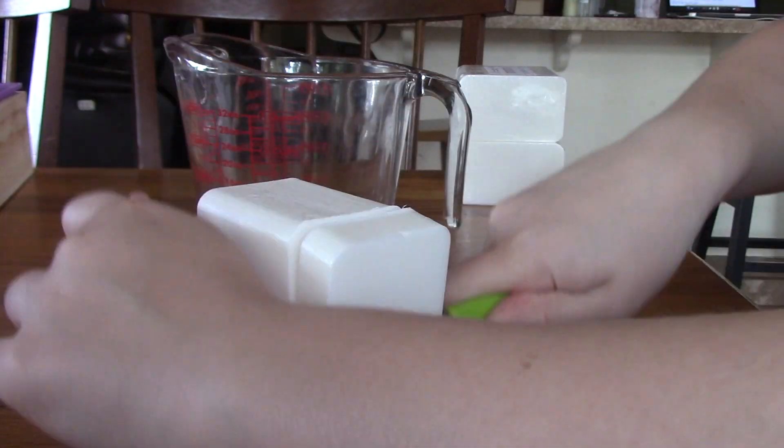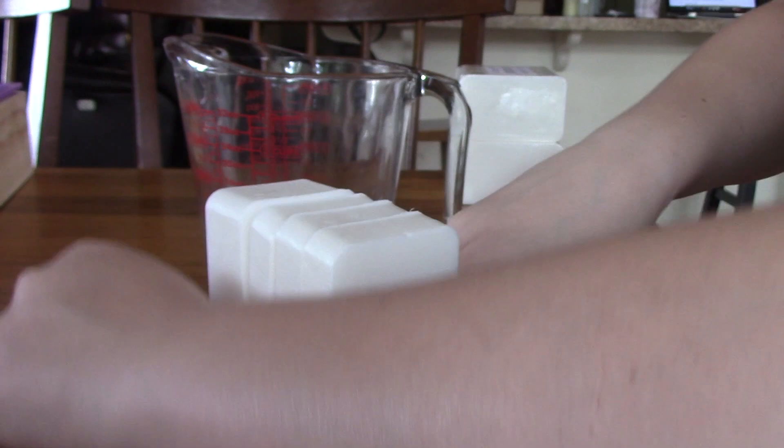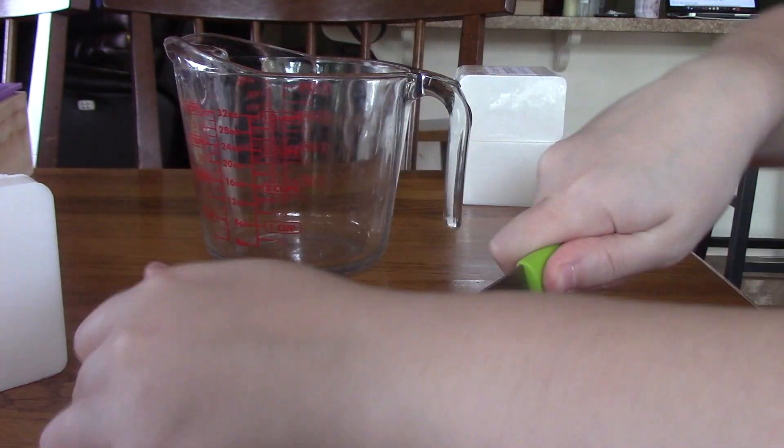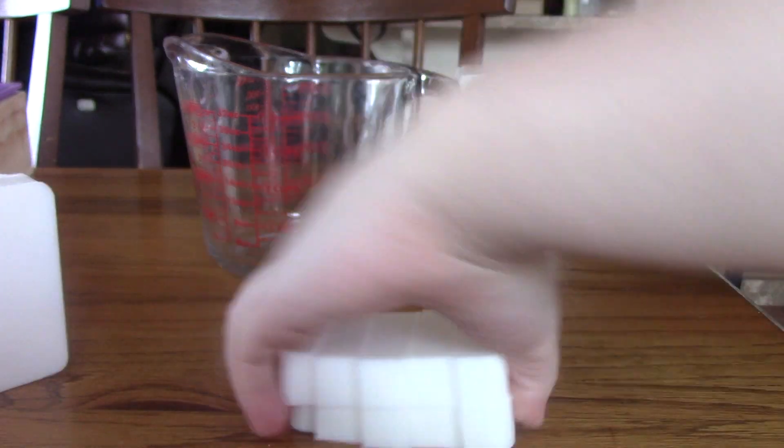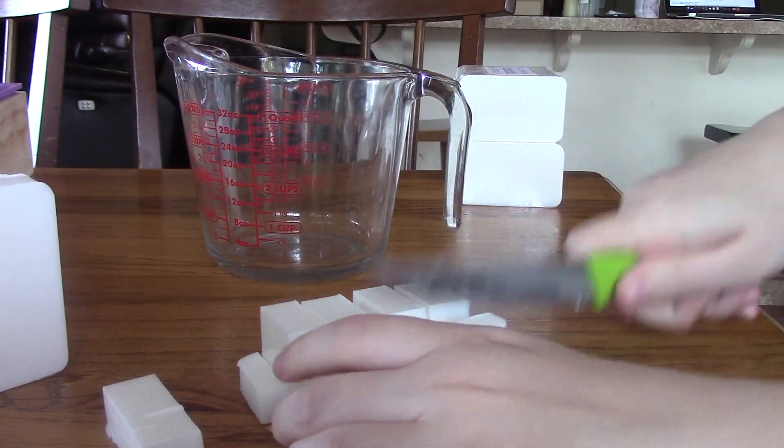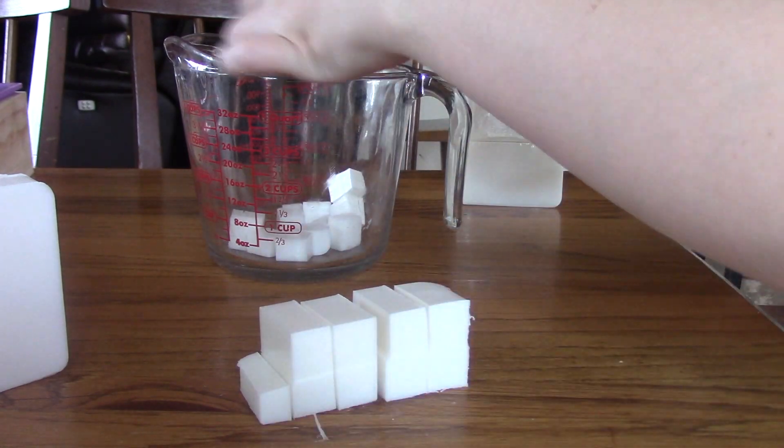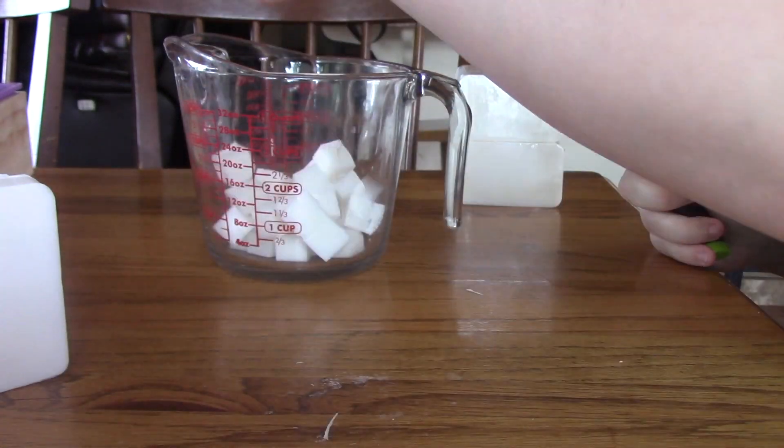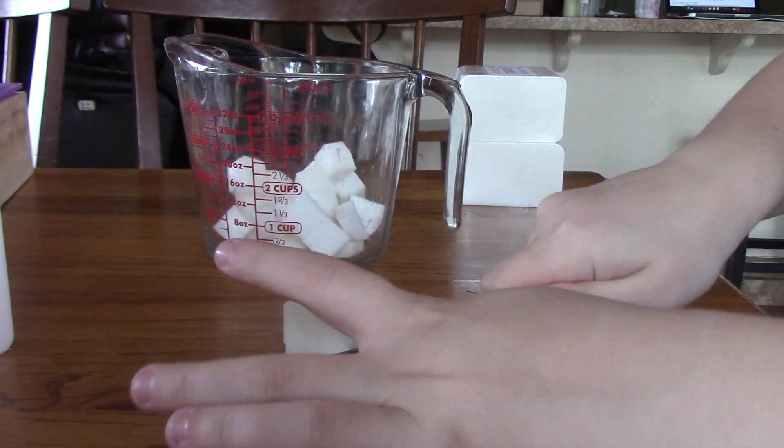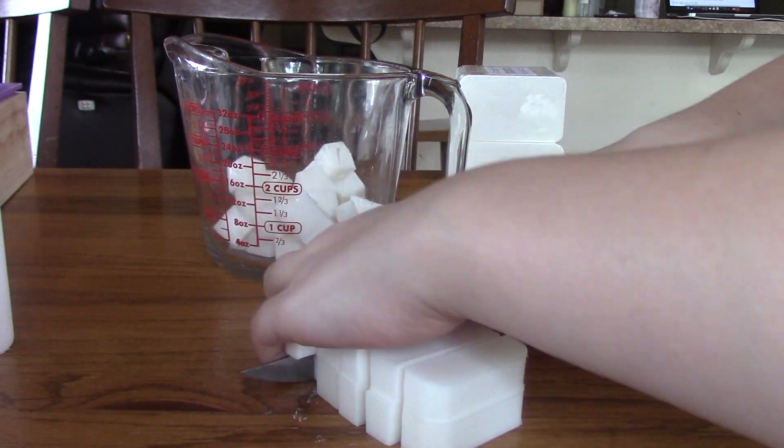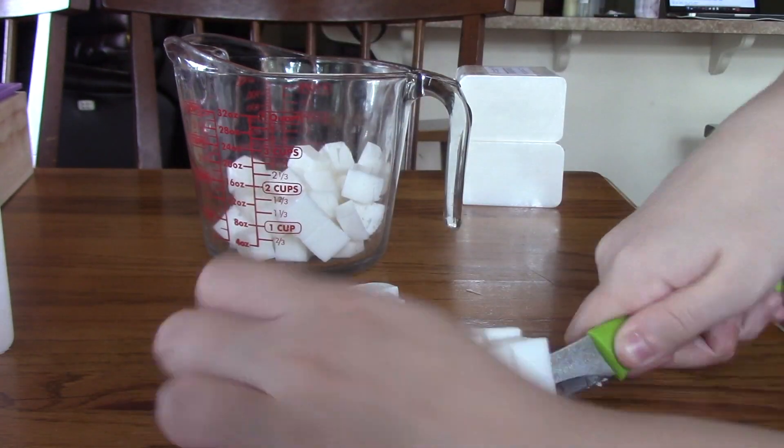To start, we're going to cut up one pound of our shea butter melt and pour into cubes and put it in a microwave-safe container. You'll need to melt this in the microwave for 30-second intervals until completely melted. I had mine in the microwave for a total of two minutes, stirring during each 30-second interval. At the end of two minutes, I still had a few small chunks, but with continued stirring those melted pretty quickly.